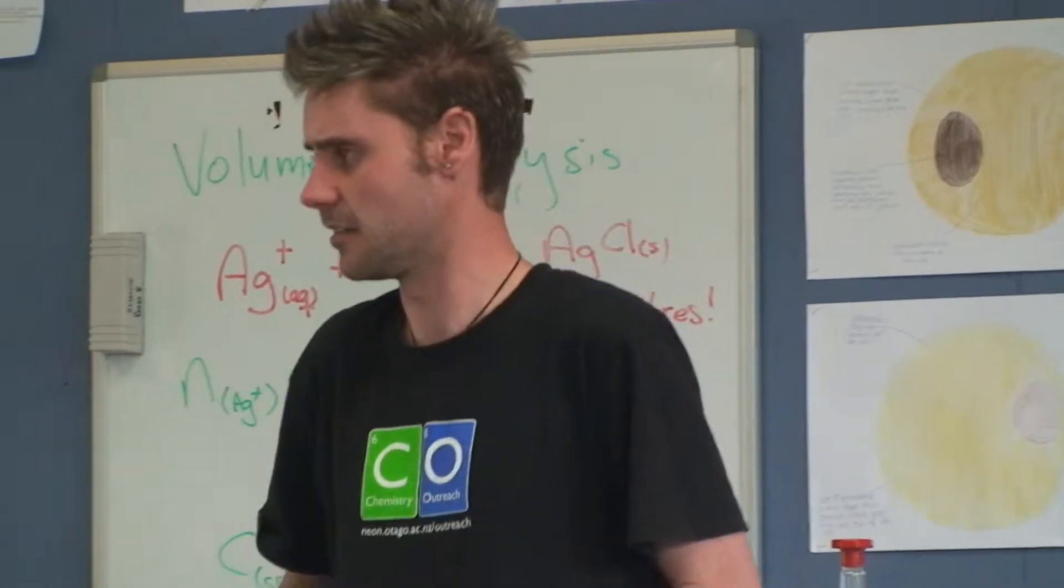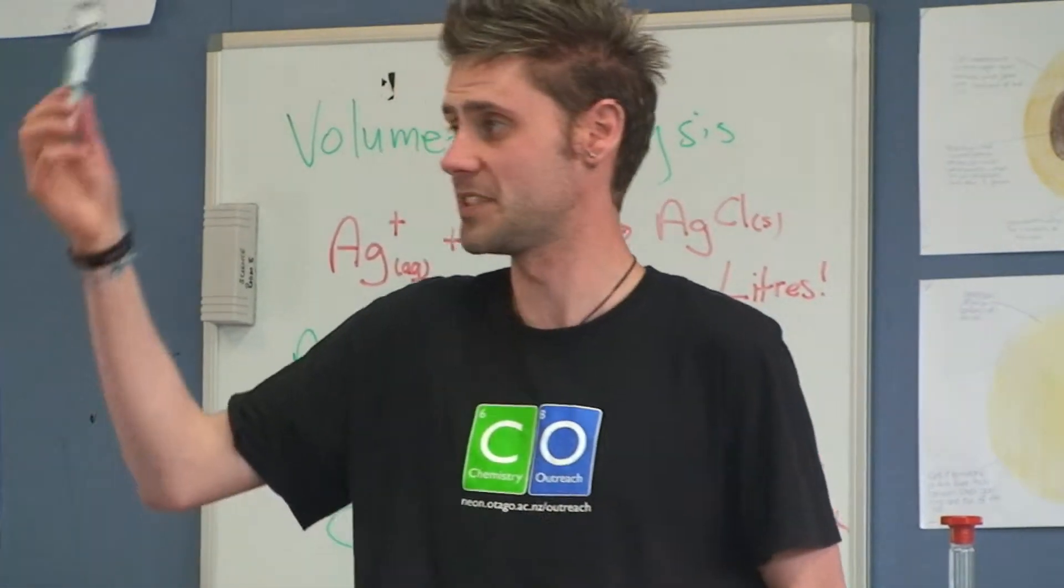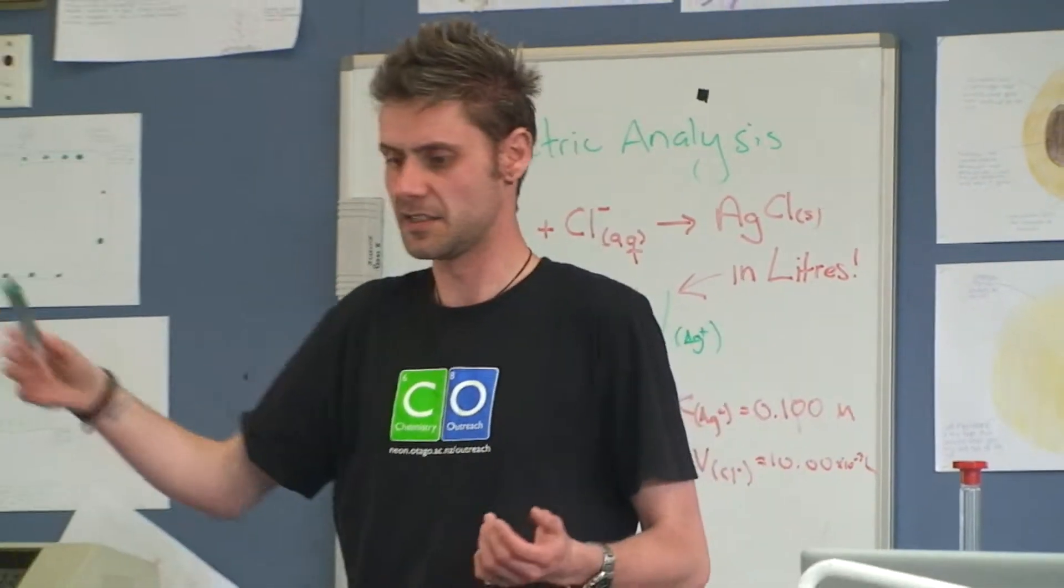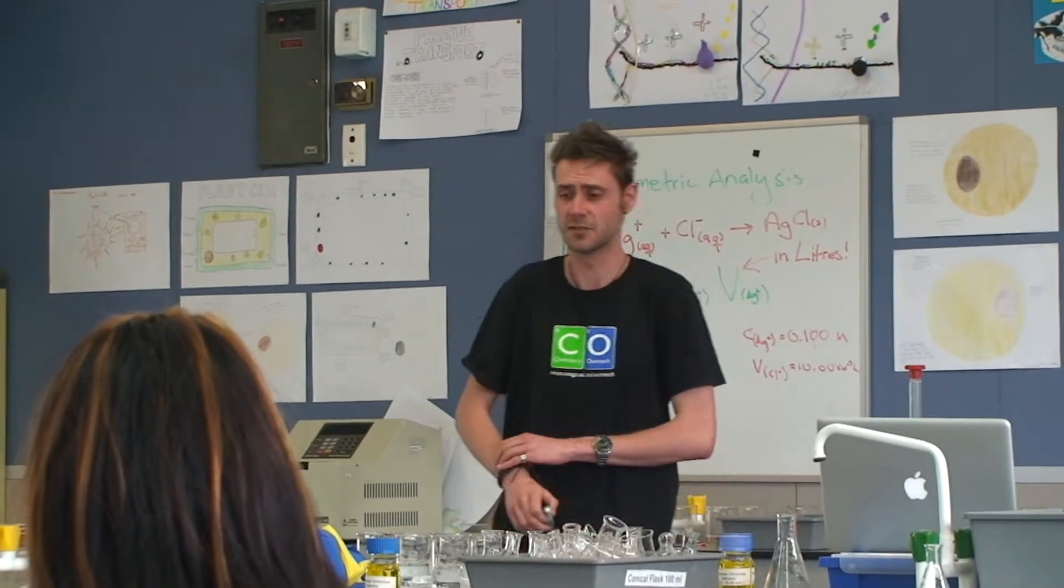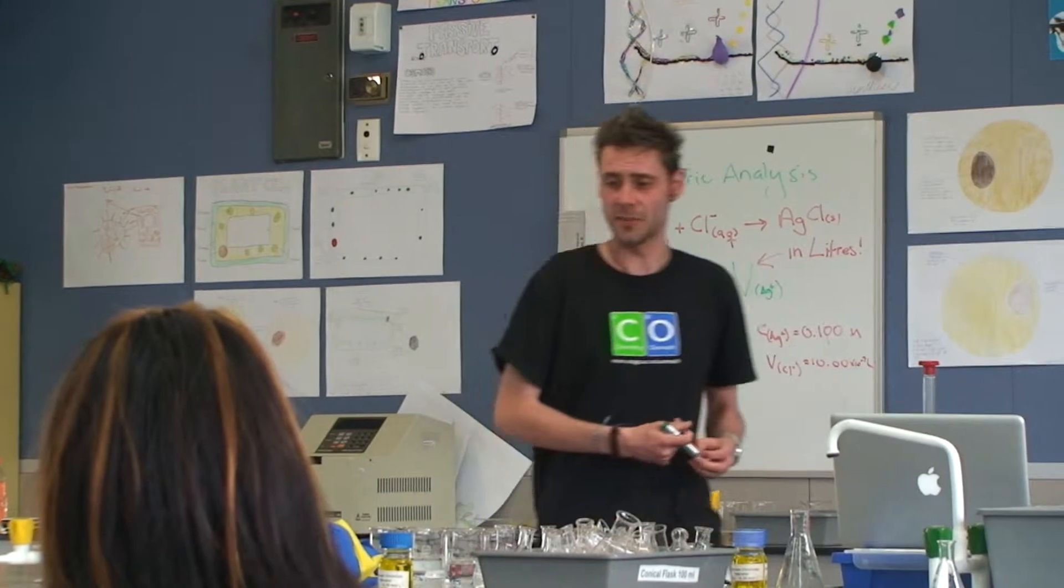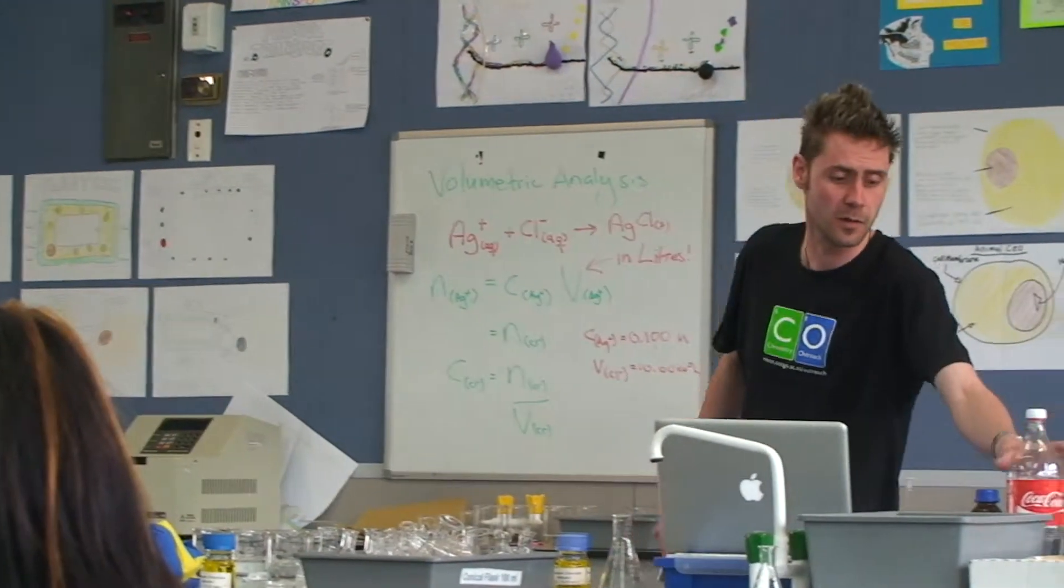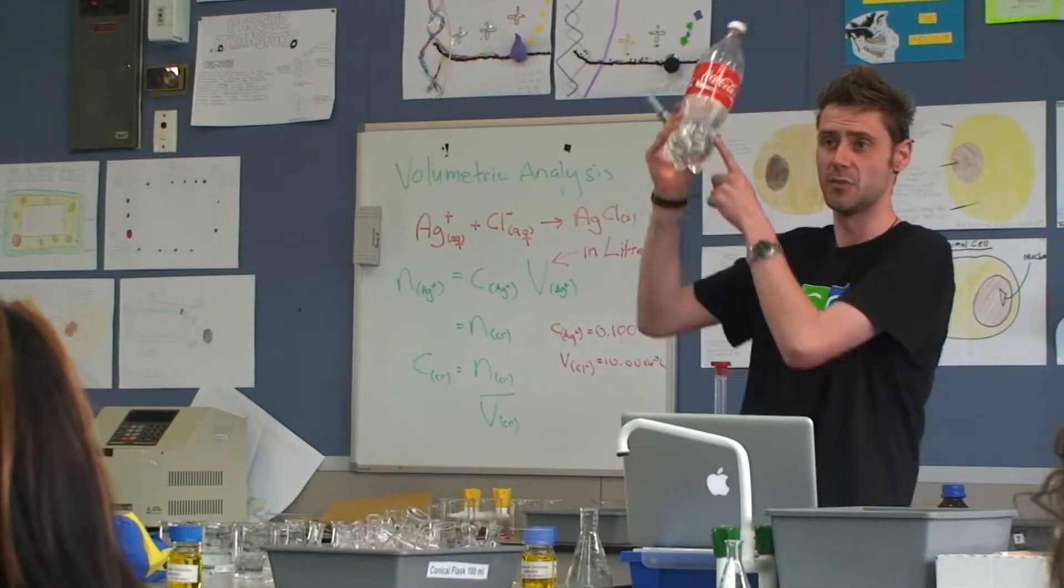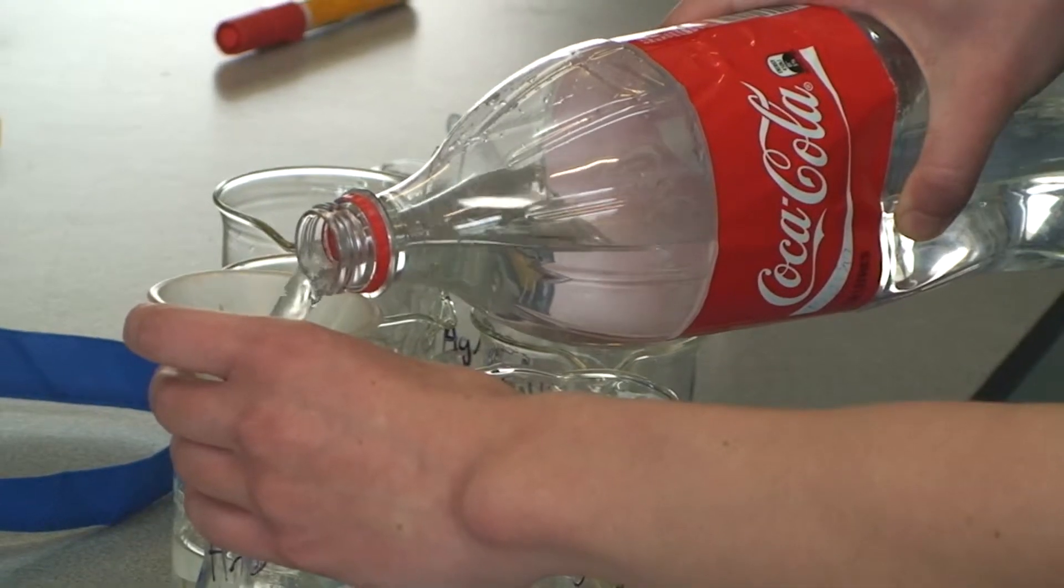In the lab however, we've got the opportunity to use more precise glassware and more accurate methods. And the method we're going to use this afternoon is called volumetric analysis and we're going to be using it to calculate the chloride concentration in the seawater we collected last night from the ocean.